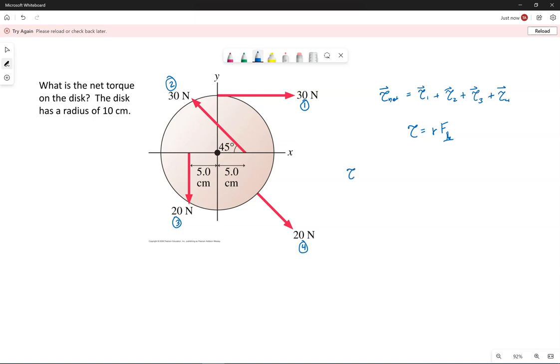So for force 1, torque 1, the lever arm always starts at the rotation axis, which is in the center, and points out to where this force is applied. So R1 is the radius of the disc, so 10 centimeters, so 0.1 meter. The force is 30 newtons, and these are perpendicular to each other. So we would write sine of 90 if we wanted to use the generic equation that was R, F sine of phi.